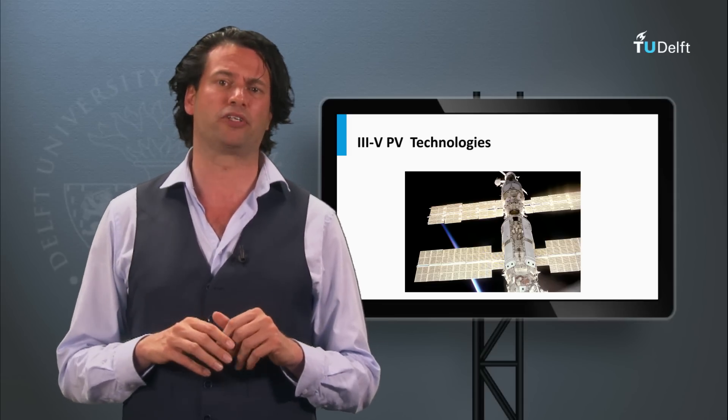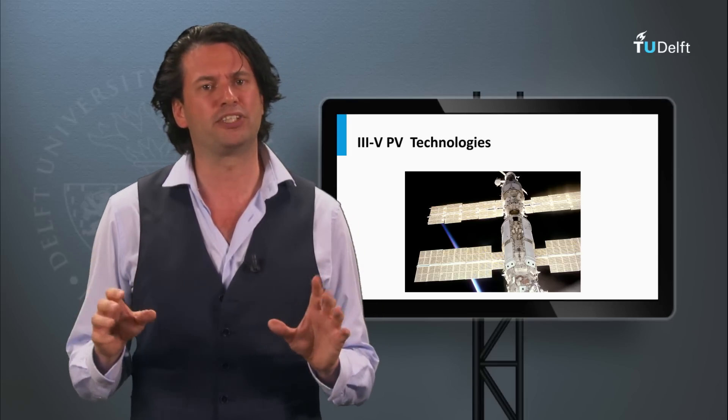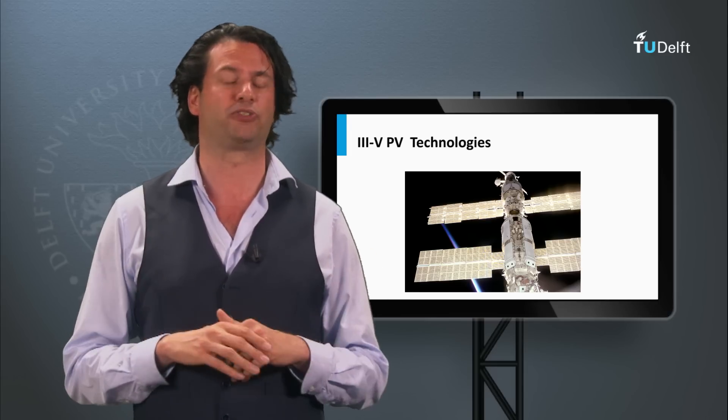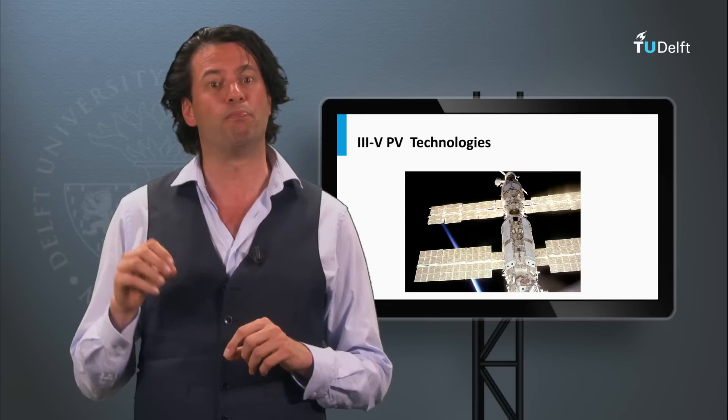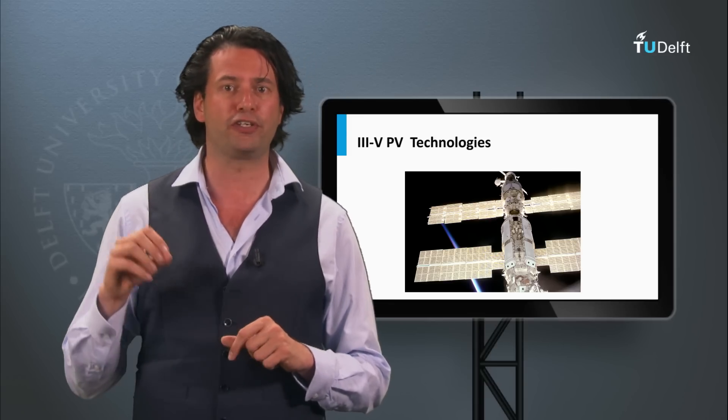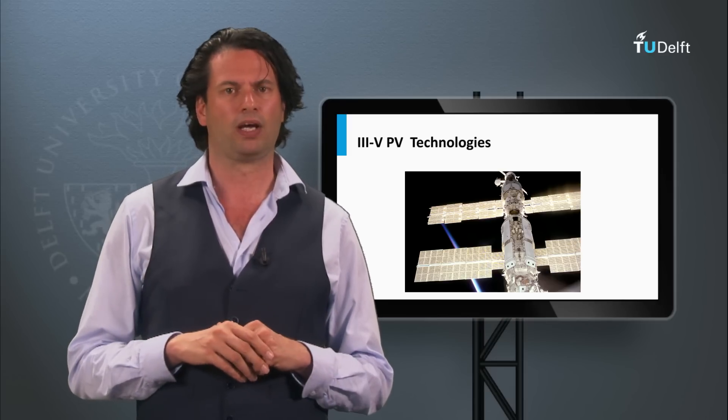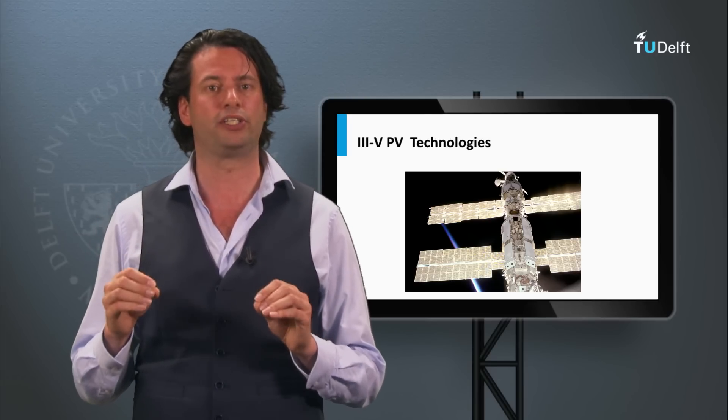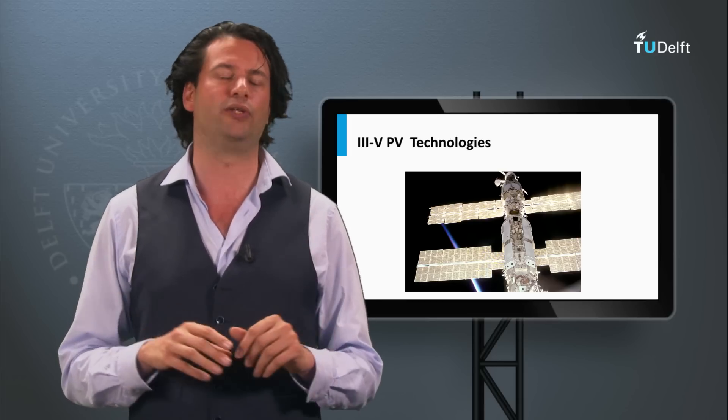The final PV technology we will discuss is based on 3-5 semiconductor materials, such as gallium-arsenide. 3-5 materials are being used in multi-junction devices, often processed on germanium wafers as substrate. The multi-junction based on 3-5 semiconductors are the most efficient solar cells today. The record conversion efficiency of 44 percent was obtained with a metamorphic triple junction in 2012. The 3-5 semiconductor solar cells are being used in concentrator PV technology and in space applications. This technology will be discussed in week 5.